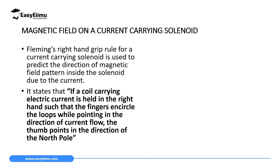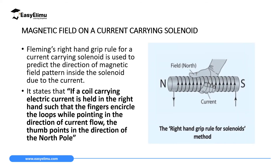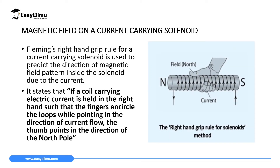Fleming's right-hand grip rule states that if a coil carrying electric current is held in the right hand such that the fingers encircle the loop while pointing in the direction of the current flow, then the thumb points in the direction of the north pole. I have an illustration here on the screen.